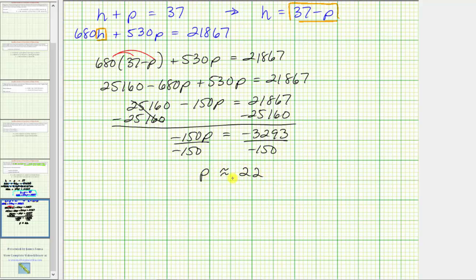So now we know the mixture will contain 22 pounds of peanuts. We still need to determine the number of pounds of hazelnuts. So we'll substitute 22 for p in this equation here, where we have h equals 37 minus p. So because h equals 37 minus p, and we now know p is approximately 22, we know h is equal to 37 minus 22, which is equal to 15.